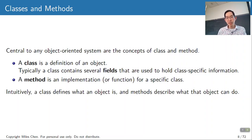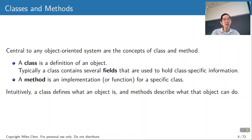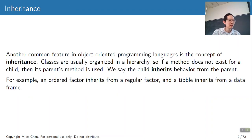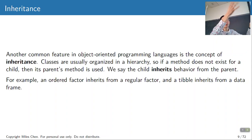Central to any object-oriented system are the concepts of class and method. Class is a definition of the object and will contain different fields. A method is a specific implementation or function for a specific class. You can think of class as defining what the object is, and methods define what the object can do.